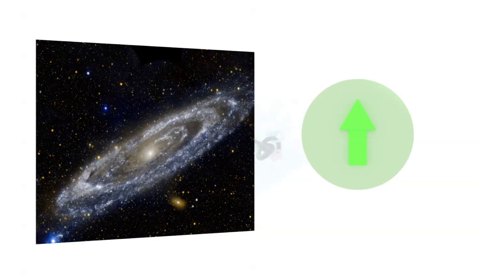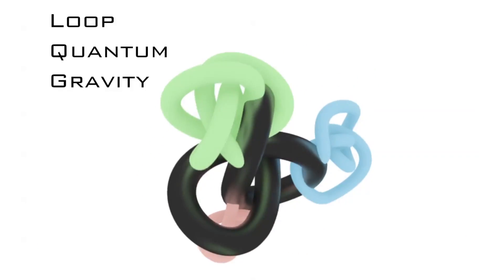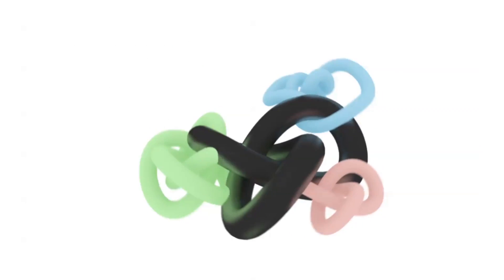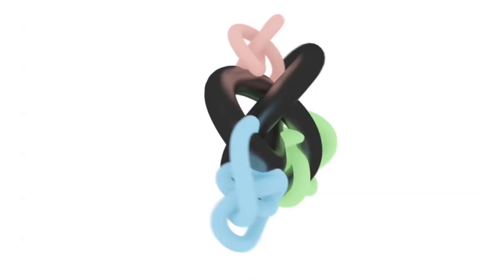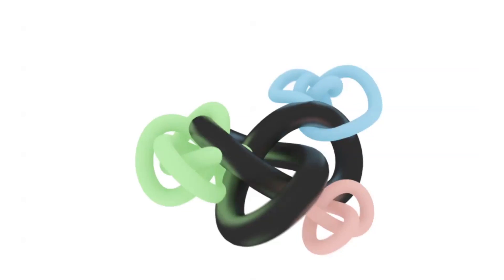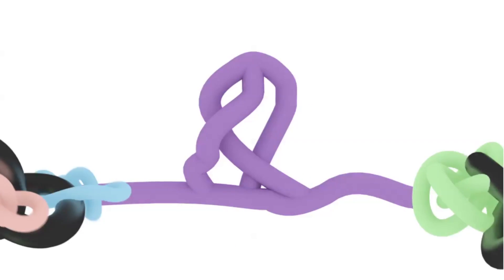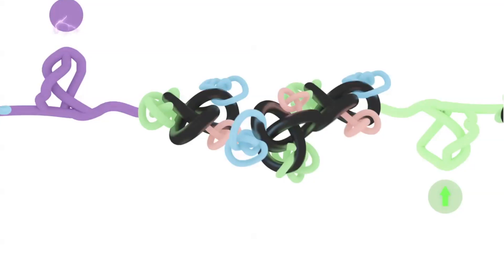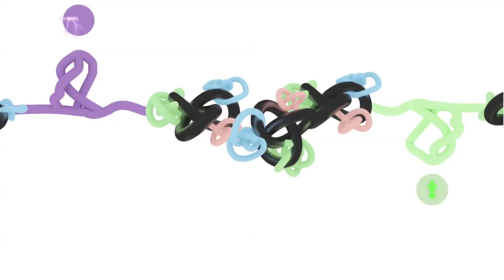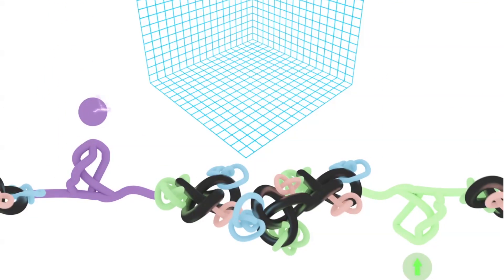But there are some theories. One idea called loop quantum gravity views space and time as lumpy, the result of a vast network of knots, braids, and twists that carry information. One kink in the network might correspond to, say, an electron, while a different one, a few links away, might be a quark. The connectedness of the network determines how, when, and where particles interact, giving rise to what we perceive as space and time.